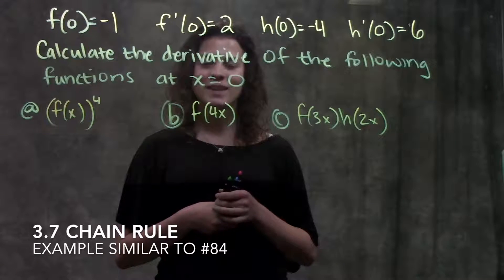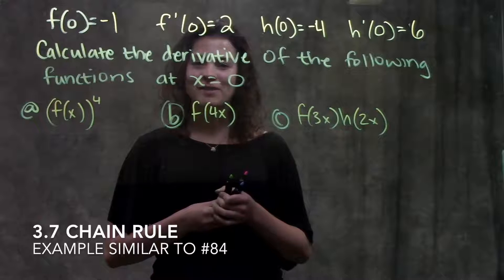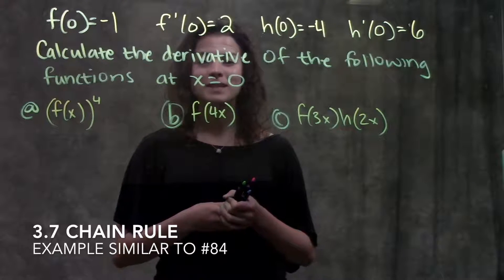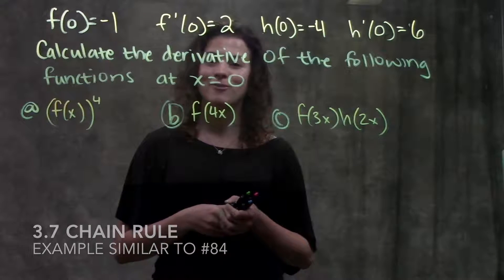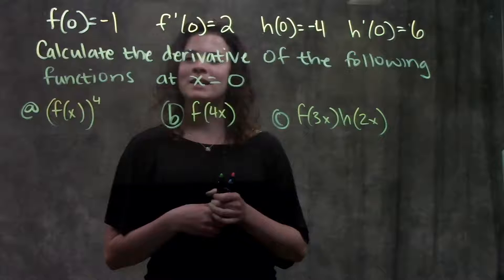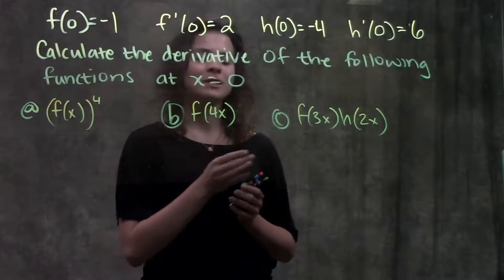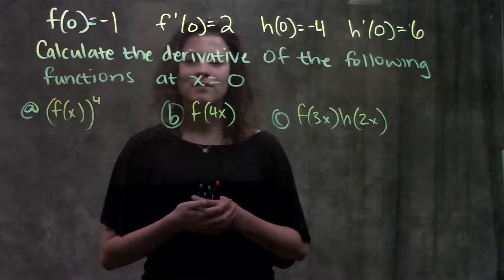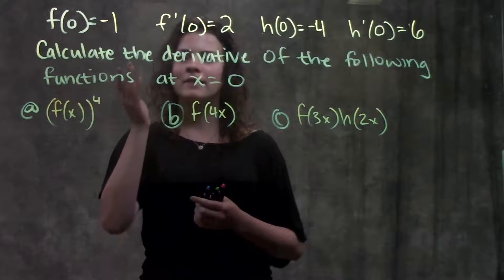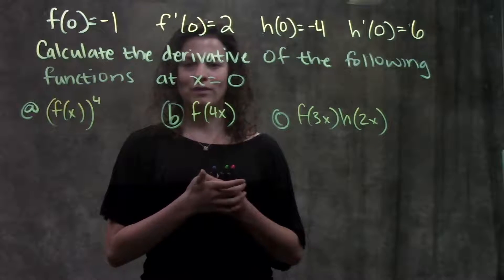This is section 3.7, Chain Rule. In this video, we're going to go through an example of a problem that's really similar to number 84 in your book. This problem asks us to calculate the derivative of each of these parts at the value x equals 0. It gives us all these values of the functions and their derivatives.